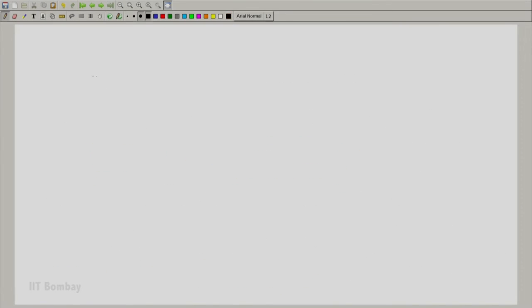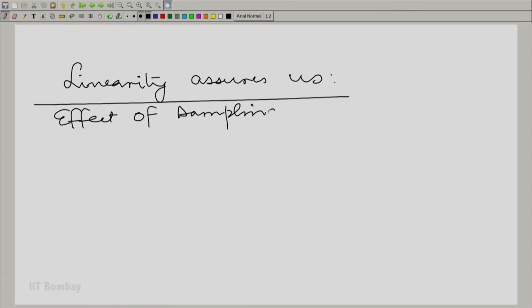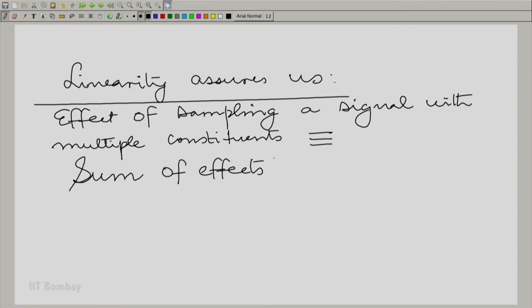Find out what happens because of each constituent, and the effect of all these constituents together is just the sum of the effects of each of these individual constituents. Let us put that point down very clearly. So, what we are saying is linearity assures us.